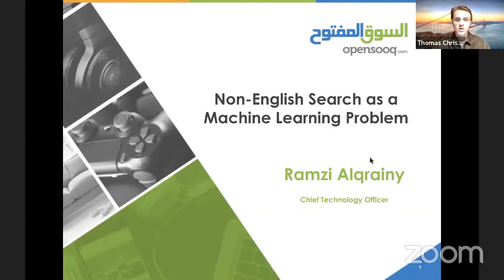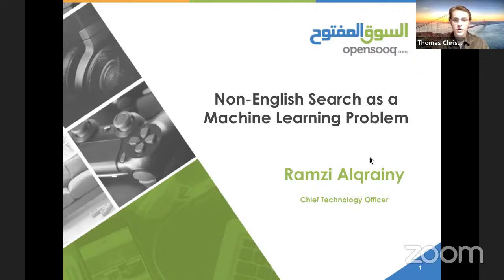Alakrani joins us as the CTO of OpenSouk, an online shopping website in Jordan. He mainly handles the technical aspects and is in charge of about 50 engineers across three different countries. He has worked in the industry for over 10 years and has a wide range of experience in the field, as well as a master's degree in computer science from the University of Jordan. Today we'll be talking about how search can be treated the same way any machine learning problem can be treated. Please give your full attention to Ramaji Alakrani.